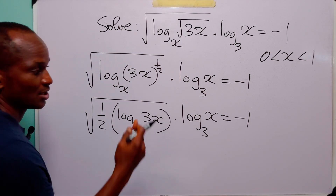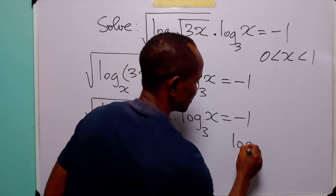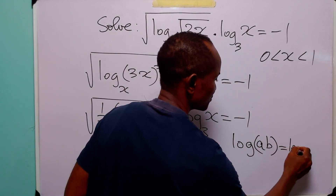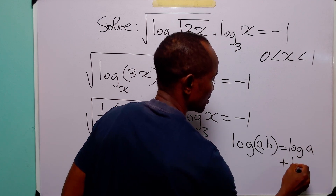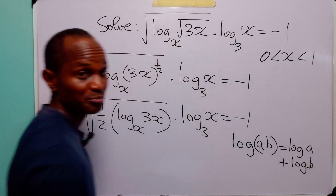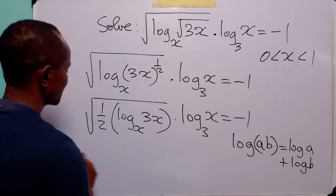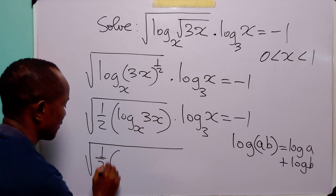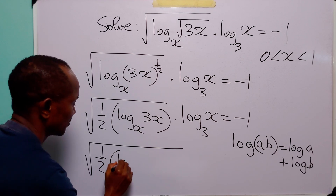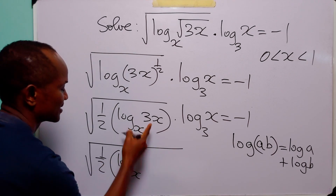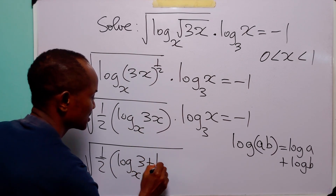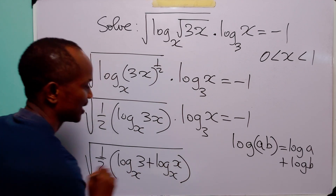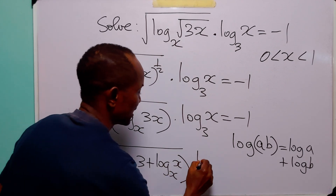Now you can see that this is a product. Remember that when we have log of ab, this is equal to log a plus log b. So this becomes half multiplied by log to base x of 3 plus log to base x of x.